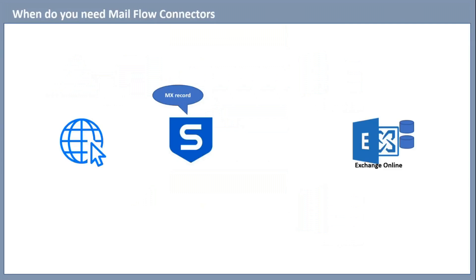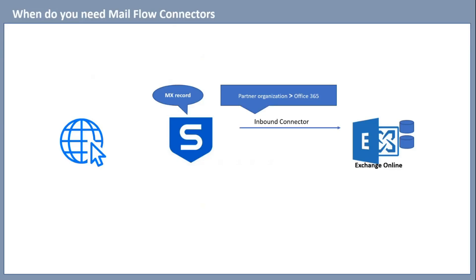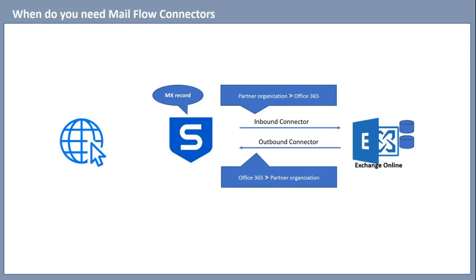The fourth scenario is if all mailboxes are hosted in Exchange Online and you are using a third-party email filtering solution. In this setup, the MX Record points to the third-party email filtering server, so incoming emails are first delivered there before being routed to Exchange Online. Outgoing emails from Exchange Online are also routed through the third-party server. In this scenario, you need two Mailflow Connectors: one inbound connector from partner organization to Office 365, and one outbound connector from Office 365 to partner organization to route all external emails through the third-party filtering server.